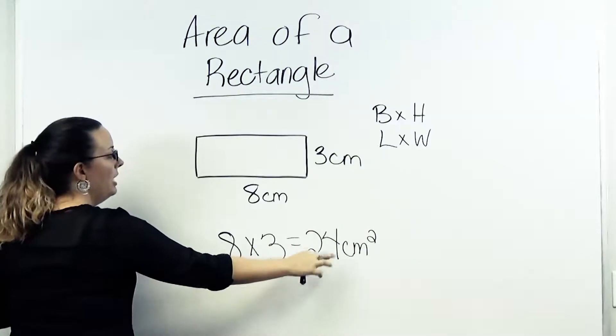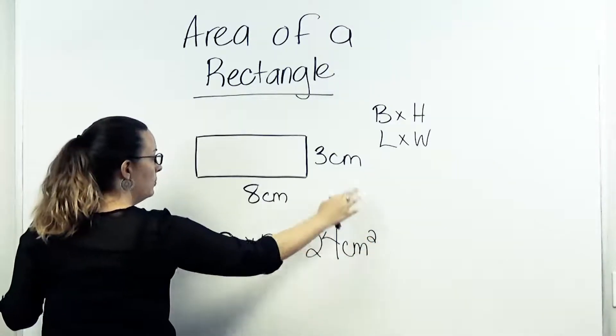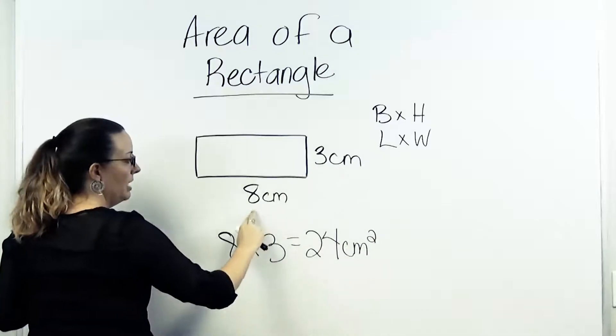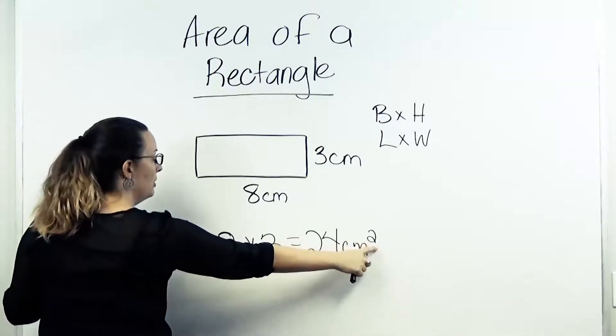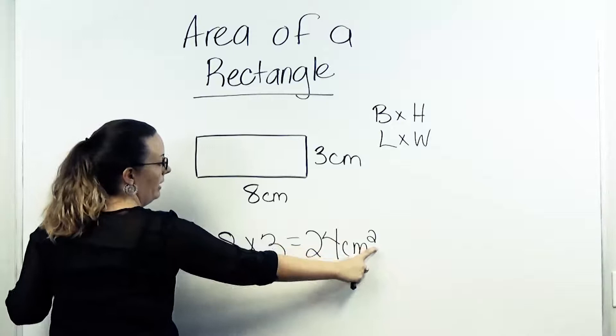And so it would be 24 centimeters squared, because we multiply two dimensions together, and this lets us know that we're dealing with the area of our rectangle.